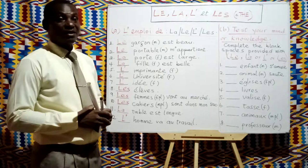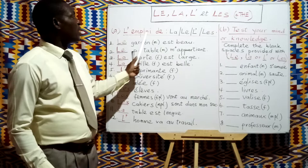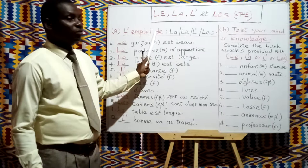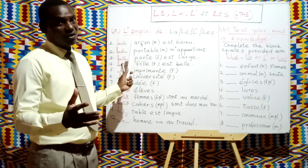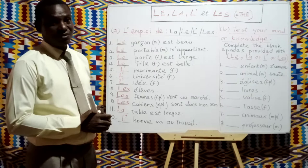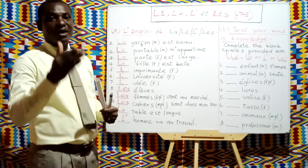Now, l'emploi de la, le, l'apostrophe, et les — the uses of le, la, l'apostrophe, and les. Let's see how we can use each of the four properly. Here we have some examples to help guide you in understanding when to use le, la, l'apostrophe, or les.